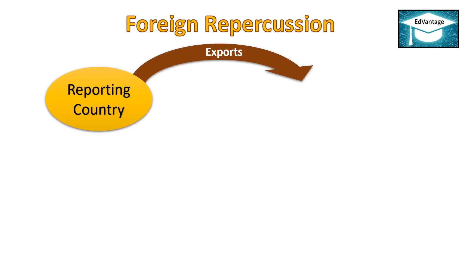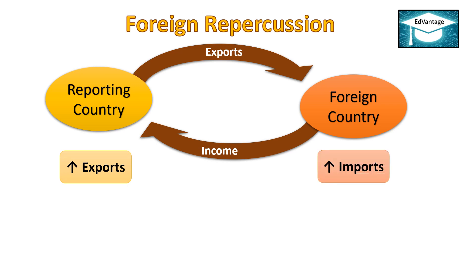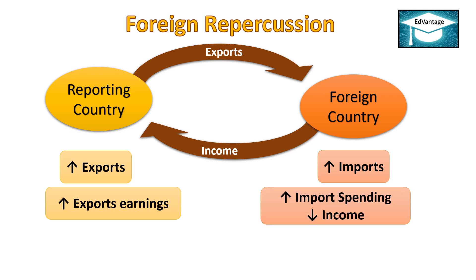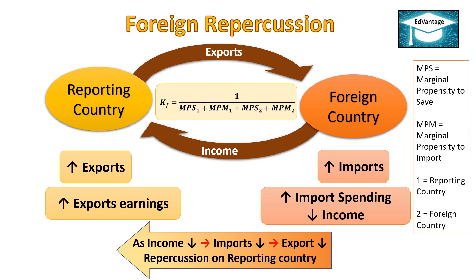Foreign Repercussions: There are two countries taking part in foreign trade — one is the reporting country and the other is the foreign country. When exports of the reporting country rise, the imports of the foreign country also rise, leading to increase in export earnings. As the imports of the foreign country rise, it leads to fallen income. As income falls, its imports also fall, which leads to fallen exports. This is called Foreign Repercussion. The formula for computation of the Foreign Trade Multiplier is given accordingly.